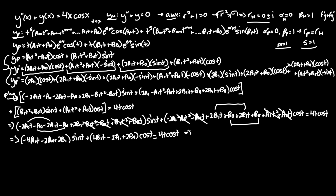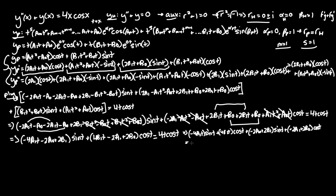Plugging those back into y_p = (a₁t² + a₀t)·cos(t) + (b₁t² + b₀t)·sin(t): the cosine term becomes (0 + t)·cos(t) = t·cos(t), and the sine term becomes (t² + 0)·sin(t) = t²·sin(t).